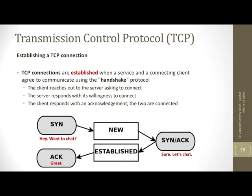TCP connections are going to be established — meaning the two computers are going to agree to talk to one another. It's going to start with the client. The client is going to reach out to the server and initiate the connection. The server is supposed to respond back with a message saying whether or not it's willing to talk to that client under those conditions — conditions being things like port, IP address, and so on. Technically the IP is going to be handled by the router, so firewalls and things are going to look at that.